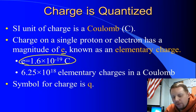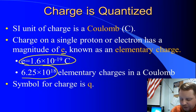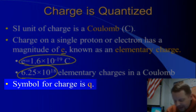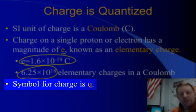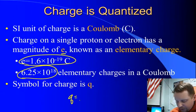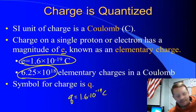And to give you an idea how big a coulomb is, there are 6.25 times 10 to the 18th elementary charges in a single coulomb. Now the symbol for charge is q, so if we were talking about the charge on some object, we could say the charge is equal to, and if it was one elementary charge, we would say the charge is equal to 1.6 times 10 to the minus 19 coulombs. That would be the charge, for example, on a proton, since it's positive.